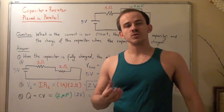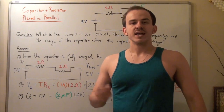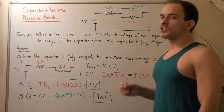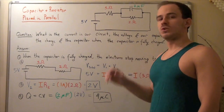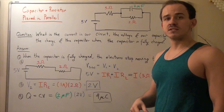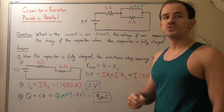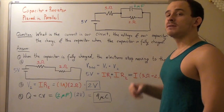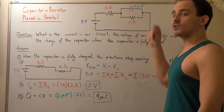In this example, we're going to look at an electric circuit that has the following components. This electric circuit has one battery with a voltage of 5 volts. It has two resistors, one having a resistance of 3 ohms and a second one having a resistance of 2 ohms. And we have one capacitor — a parallel plate capacitor that has a capacitance of 2 microfarads.